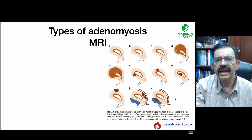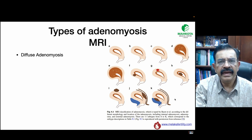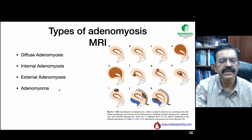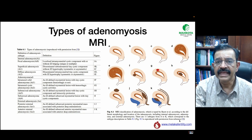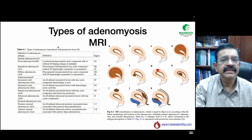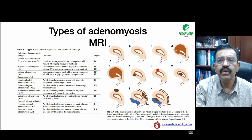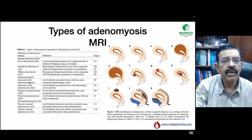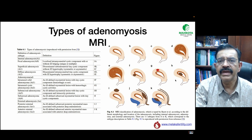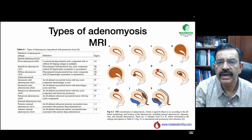When we look at MRI, the situation is slightly different. We can define it as diffuse adenomyosis, internal adenomyosis, external adenomyosis, or adenomyoma. Numbers A to E are what we call internal adenomyosis — adenomyosis that starts internally and goes outwards, depending on how much of the junctional zone is affected. If there is globular involvement, it is more of a diffuse adenomyosis. The adenomyoma type includes submucous, subserous, or intramural adenomyoma.